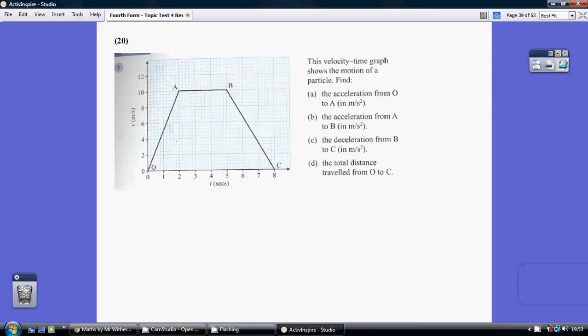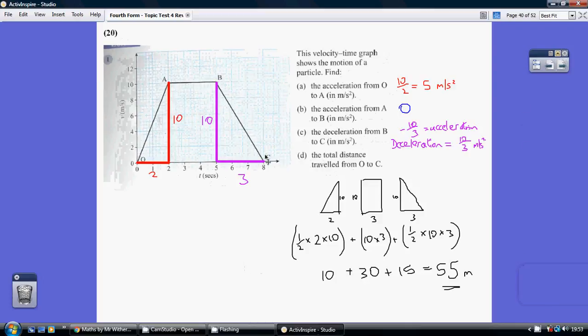Question 20. Now remember, with a velocity-time graph, the acceleration is the gradient and the distance is the area under the graph.